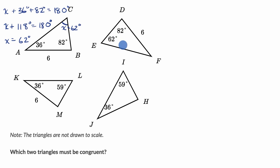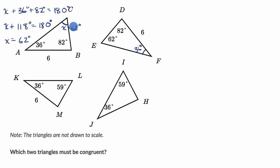Now let's do the same thing with this next triangle. It has an 82-degree angle and a 62-degree angle, just like the first triangle. So we know the third angle must be 36 degrees, because 82 plus 62 plus 36 equals 180 — we just figured that out from the first triangle.